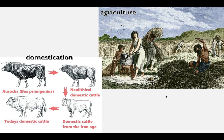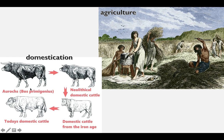Eventually, people learned they could grow plants and keep animals for food and resources. The word domestication means when humans change or use animals for what they need. You can see how a wild sort of cow would eventually be domesticated, and over time through breeding would become what we see today as domestic cattle. Agriculture is just another word for farming.